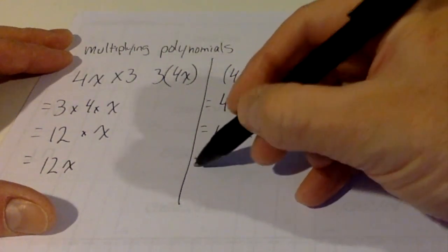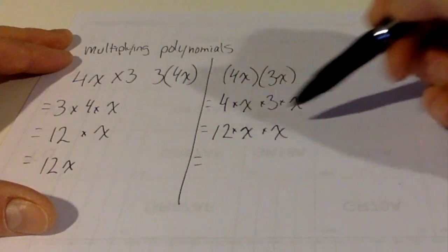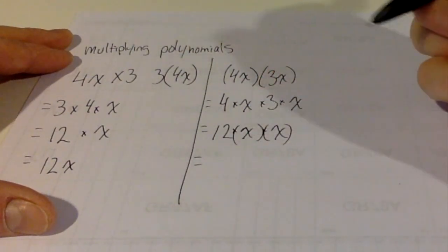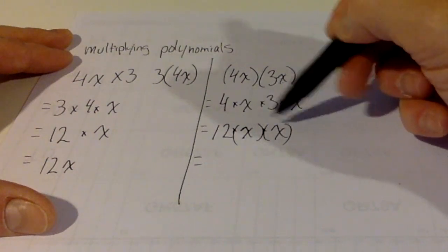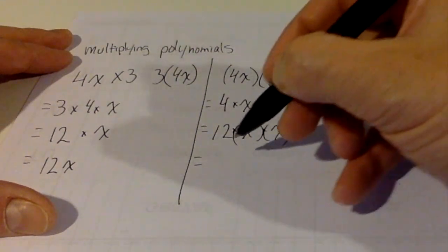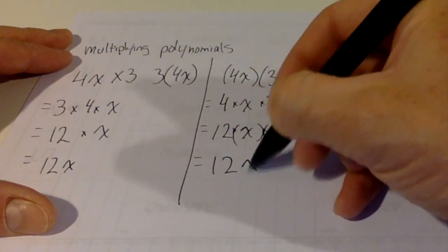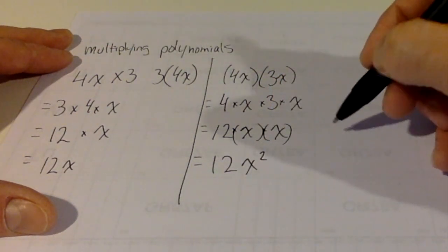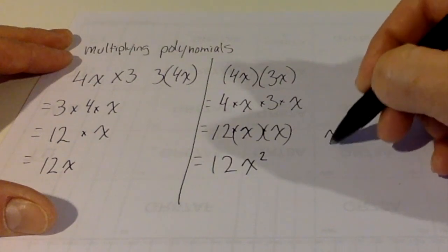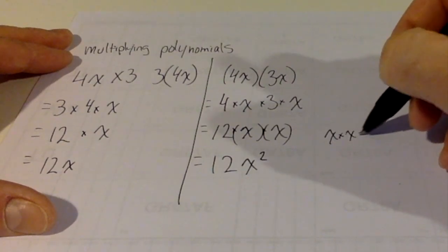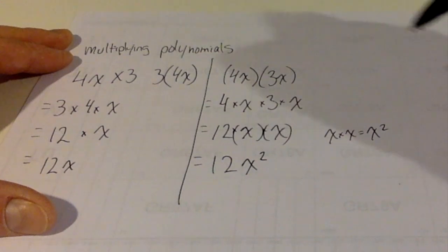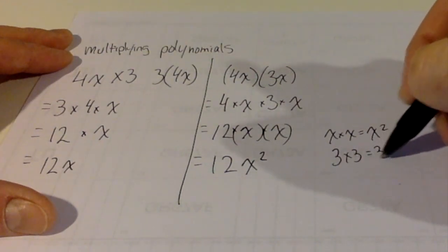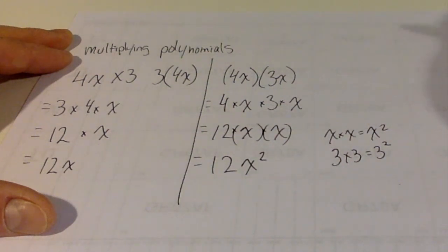An easier way to write that, instead of 12 times x times x, is we have two x's that we're multiplying together, so we do x squared. Because by now you would have learned that x times x equals x squared, or 3 times 3 is 3 squared.